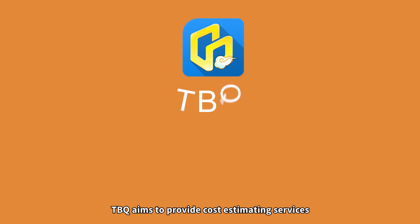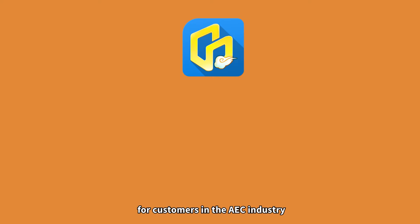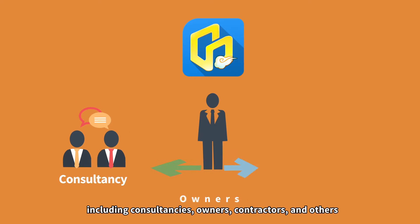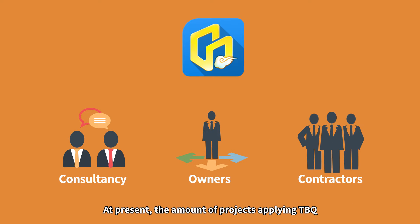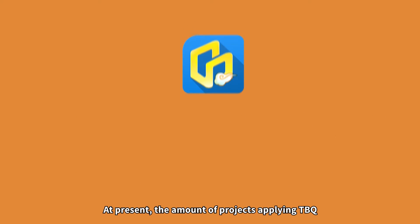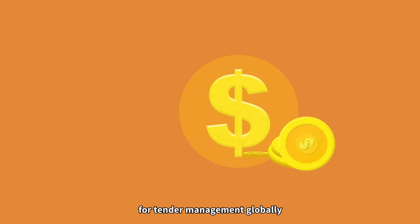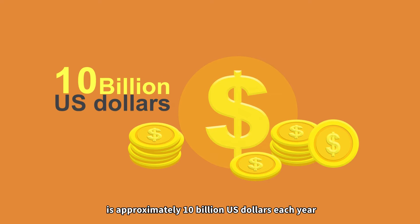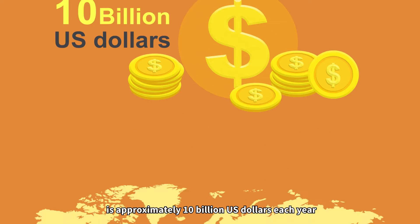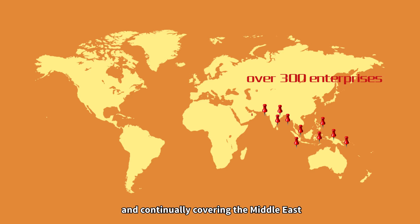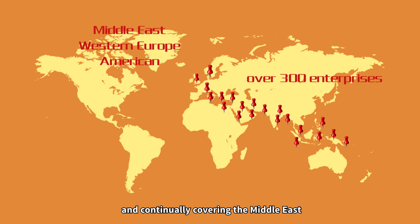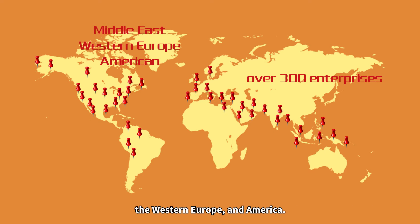TBQ aims to provide cost estimating services for customers in the AEC industry, including consultancies, owners, contractors, and others. At present, the amount of projects applying TBQ for tender management globally is approximately US$10 billion each year, with over 300 enterprises and more than 1,000 users in Southeast Asia, and continually covering the Middle East, Western Europe, and America.